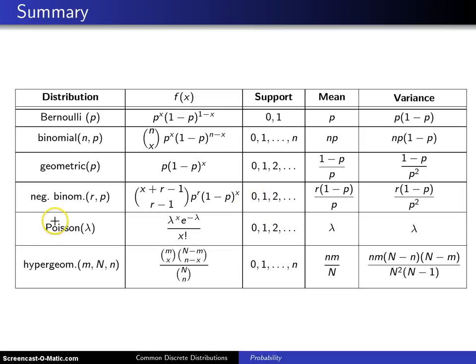The next distribution is the Poisson distribution, and the Poisson distribution has a single parameter lambda. It can be viewed as the limiting distribution of the binomial as n goes to infinity, or it can be looked at in the context of Poisson processes. It's an interesting distribution in that its mean and its variance are identical.